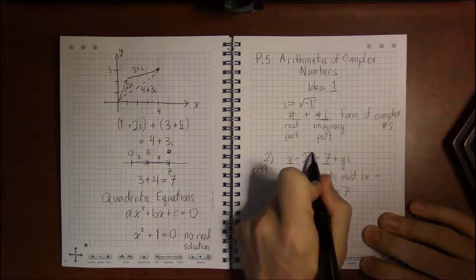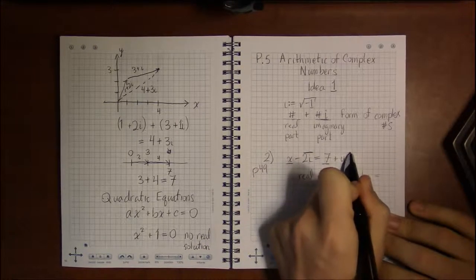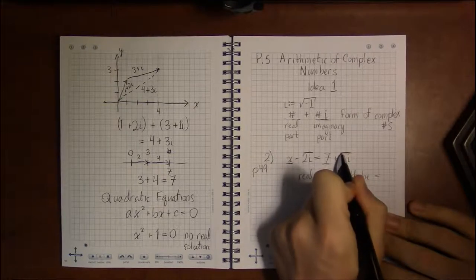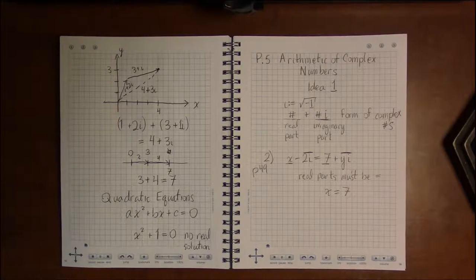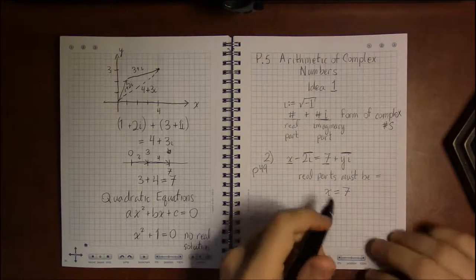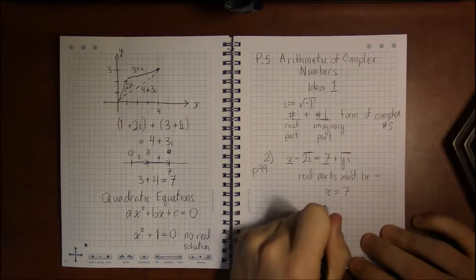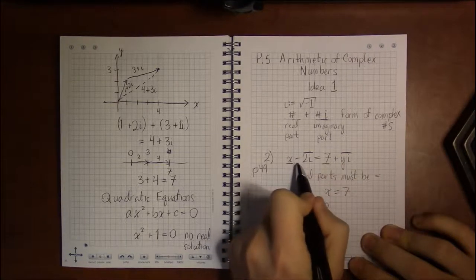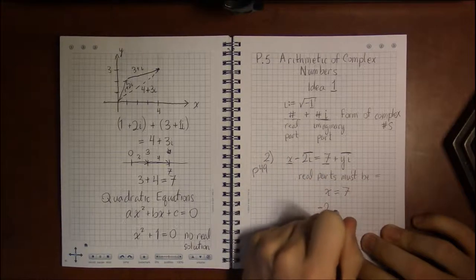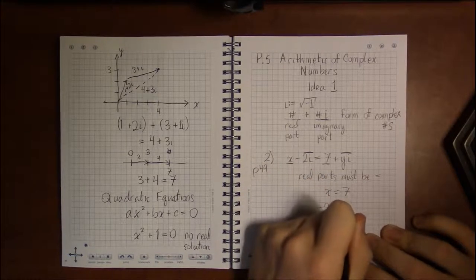And then the imaginary parts—I put a line over those to distinguish those—the imaginary parts have got to be equal. So we have to have that, if we forget about the i's for a second, 2 or minus 2, negative comes with it, equals y.